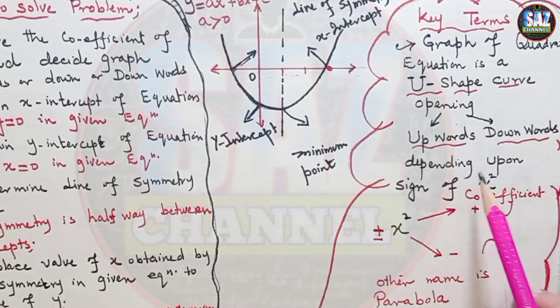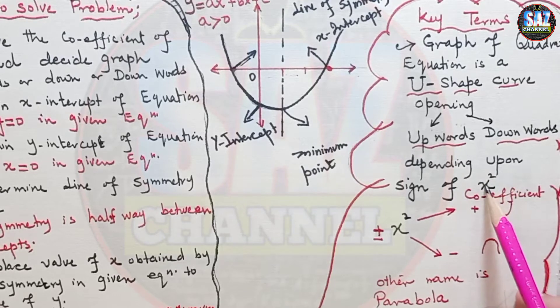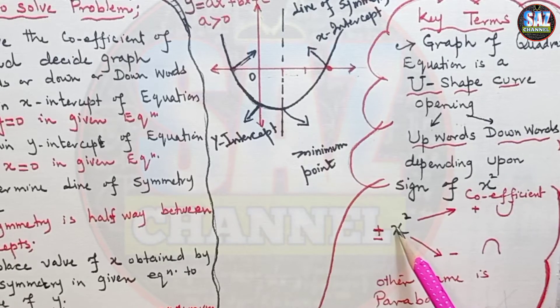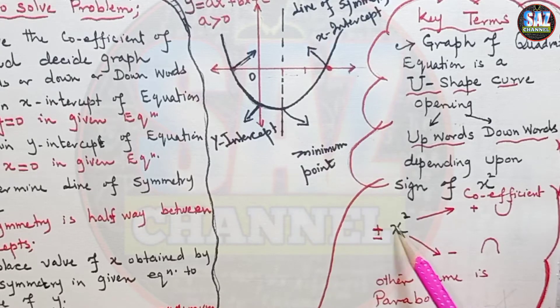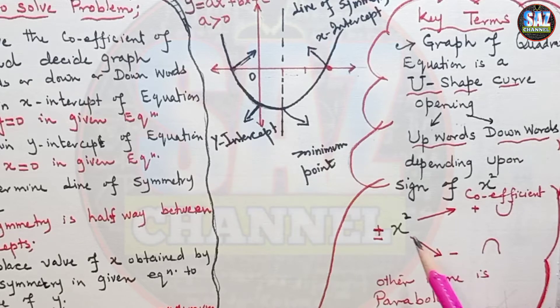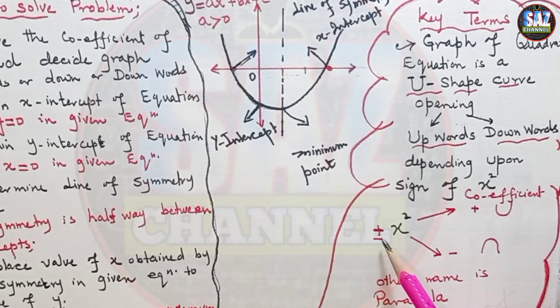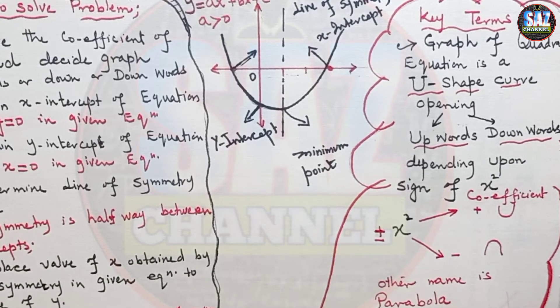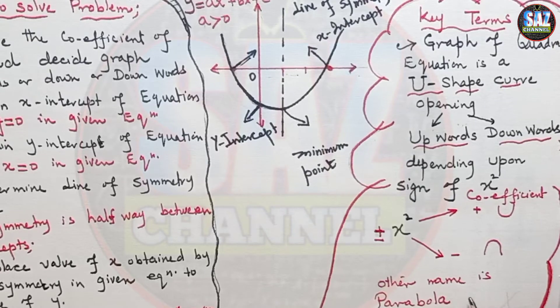That will depend upon the sign of the coefficient of the square term. If the coefficient and the sign of the square term is positive, then the curve will have the opening upward. And if the sign or the coefficient of x square is negative, then the curve will have the opening downward. Other name for the quadratic curve is parabola.